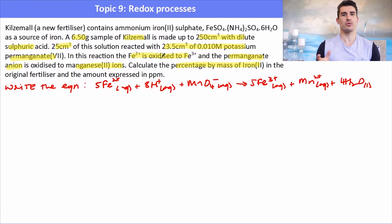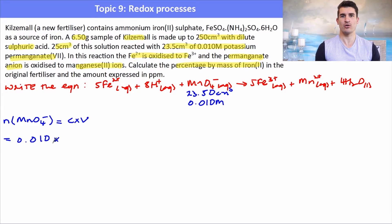Now what we need to do is work with the thing that we've been given information about. So we've been given information about MnO4⁻. So we start with finding the number of moles of MnO4⁻. That was our titer. So we calculate the number of moles, C times V, remembering to change your volume into decimeters cubed. And that will allow us to find the number of moles of the MnO4⁻. Doing that calculation we work that out to be 0.000235 mole.